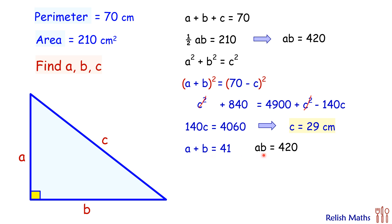So a and b are the roots of this quadratic equation. Factorizing it, we'll get x minus 20 times x minus 21 equals 0. But here the roots of this equation are a and b, so we get a, b is 20 and 21, and c is 29, and that's our answer.